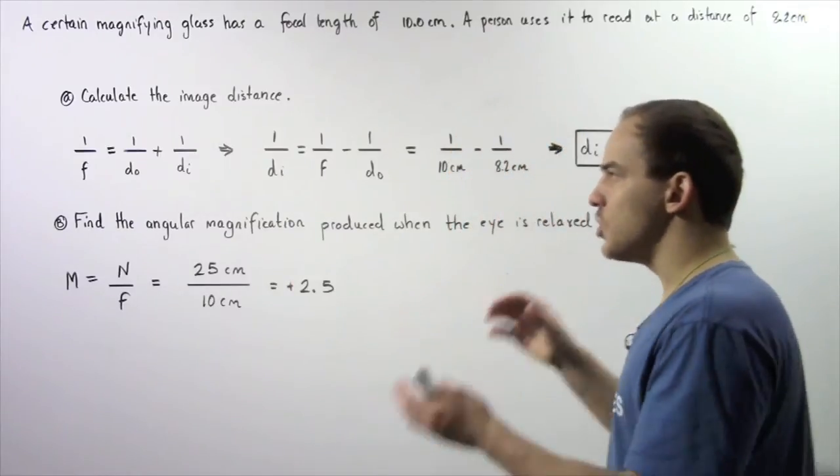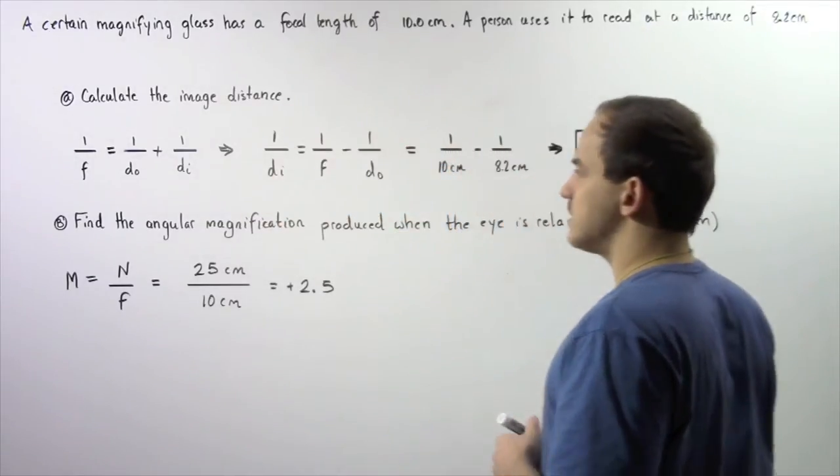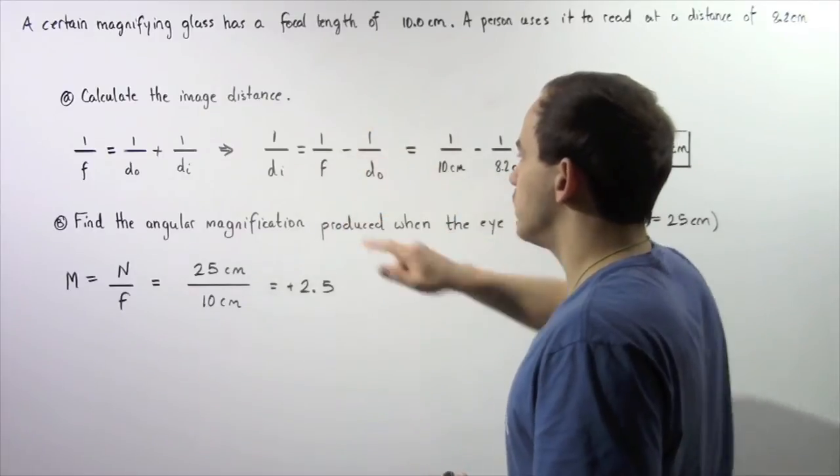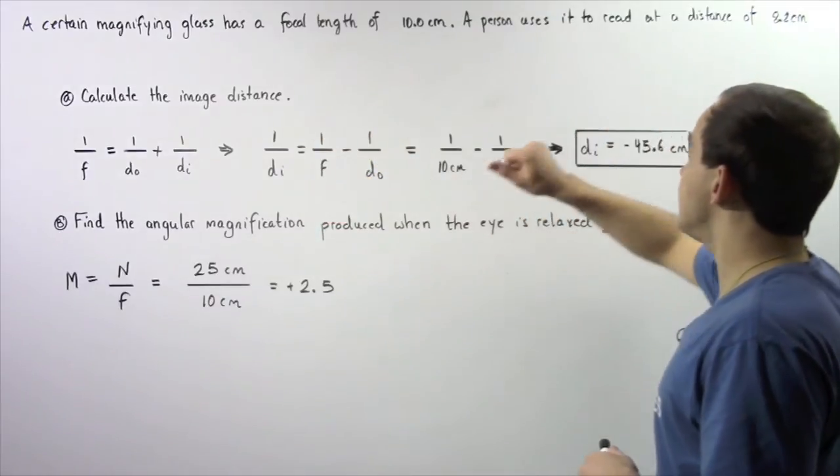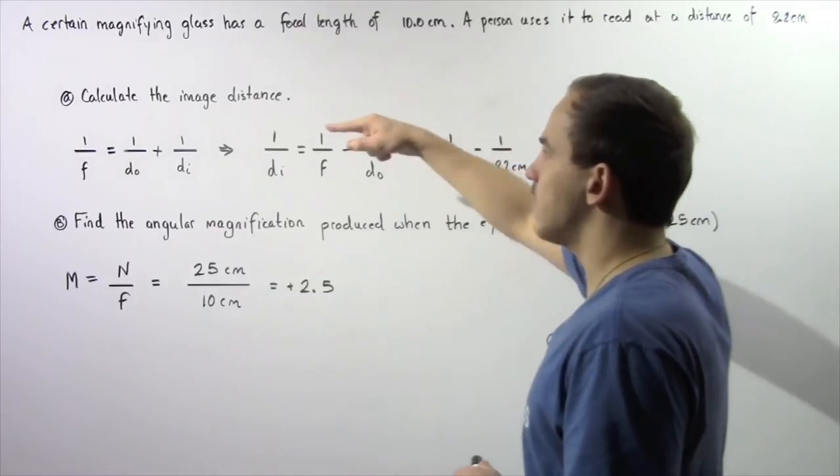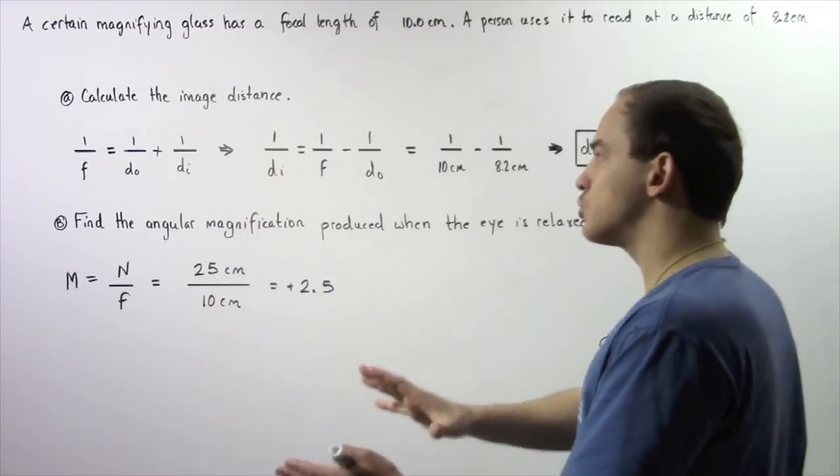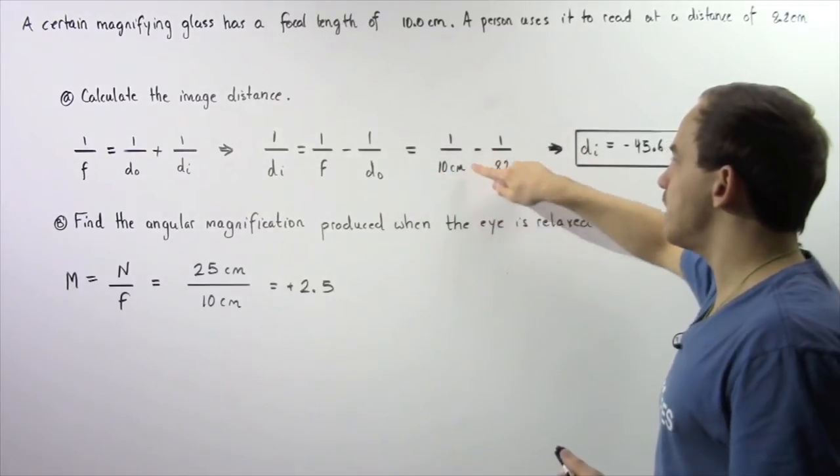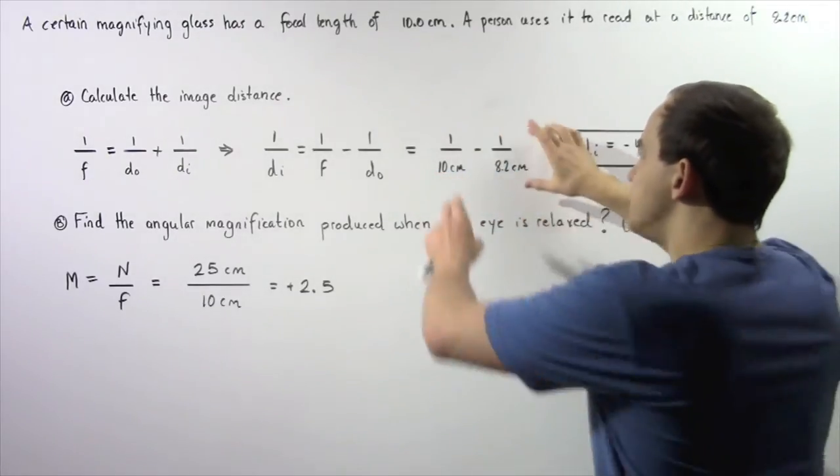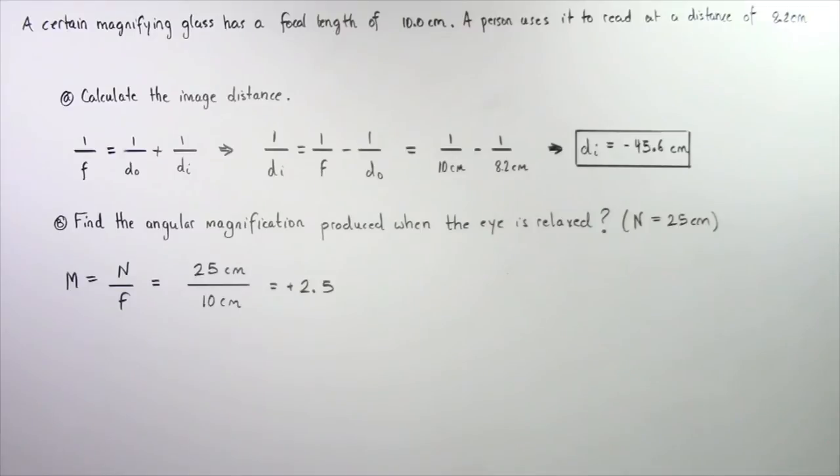Let's bring what we don't know to one side, everything else to the other side. So 1 divided by the image distance is equal to 1 divided by the focal length minus 1 divided by the object distance. The focal length of our lens is 10 centimeters and it's positive because the lens is a convex lens. The object distance is 8.2 centimeters. So 1 divided by 10 minus 1 divided by 8.2. We solve that and then we solve for our image distance di and we see that the image distance is equal to negative 45.6 centimeters.